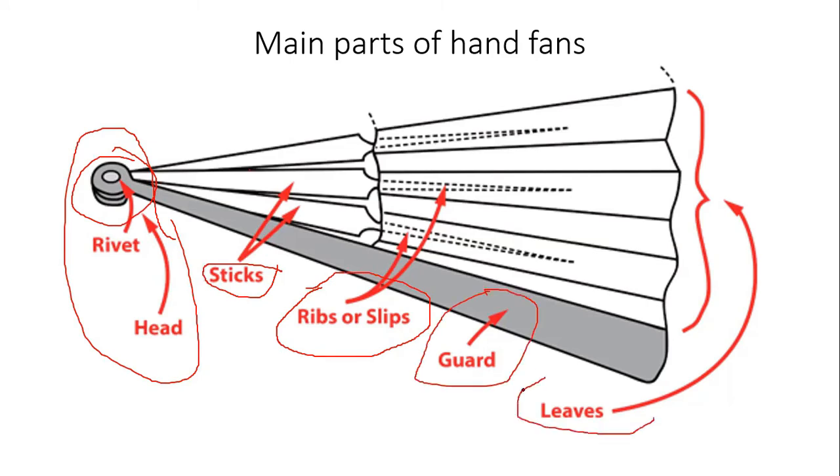Shoulder: the part where the gorge and leaf meet. Sticks: rigid supports inserted between the two outer guards onto which the leaf is attached. Washer: small circular filler piece inserted between the guard stick and the pivot pin/rivet.